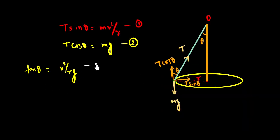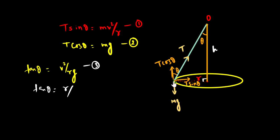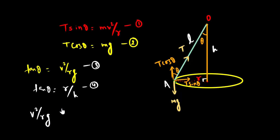This is 90 degrees, so this is a right angle triangle. Tan theta equals perpendicular over base, so r over h equals tan theta. And from the geometry, r divided by h relates to the length of the string.